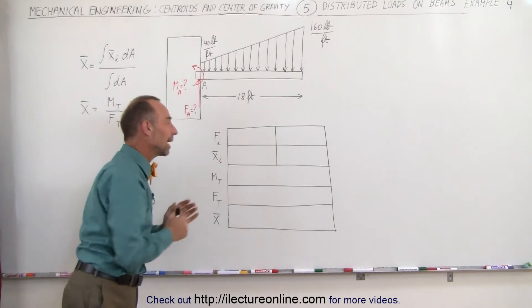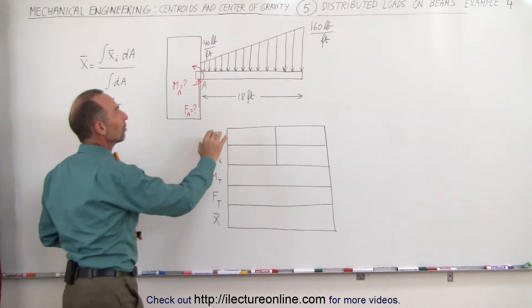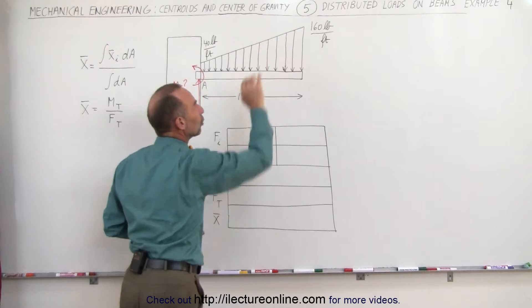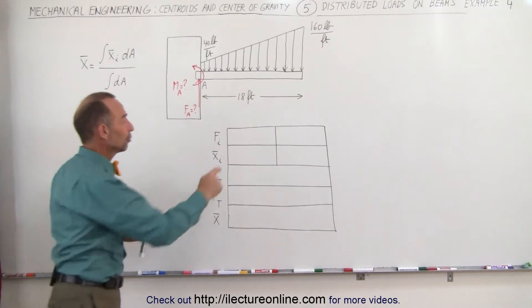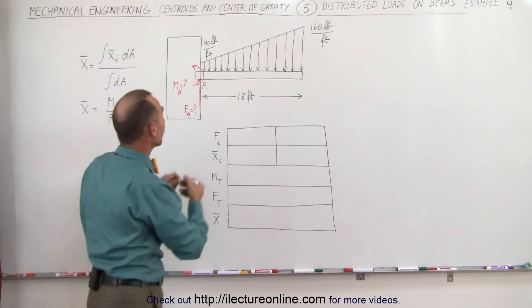Look at the table, what we have here. The first line represents the forces caused by each segment of the total load. The reason why we have two boxes right there is because we can divide this into two segments.